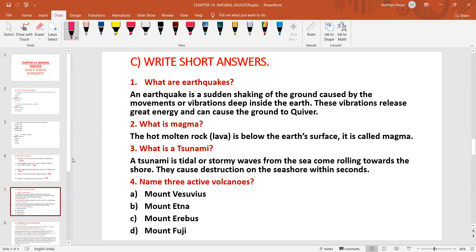What is magma? The hot molten rock lava is below the earth's surface. It is called magma.